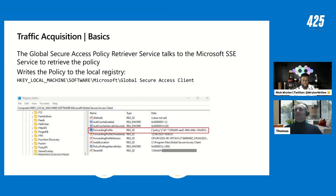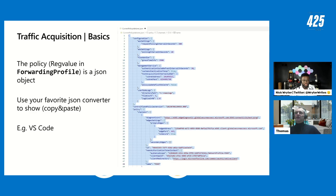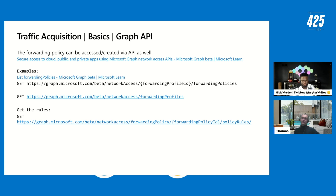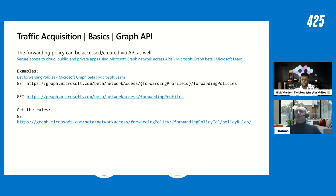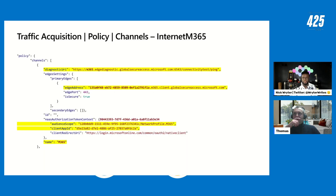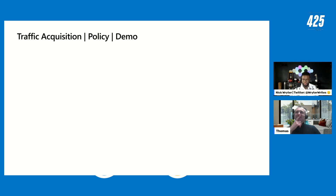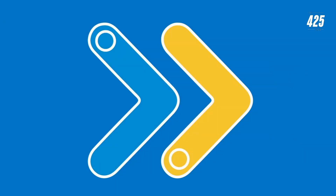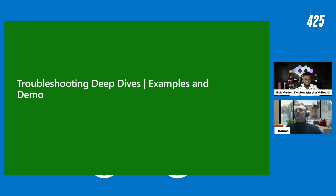The service also supports Microsoft Graph API for configuring policies and retrieving forwarding profiles programmatically. Graph API support covers almost every configuration setting in the service, including logging instances — consistent with other Microsoft services.